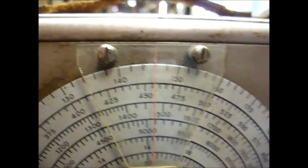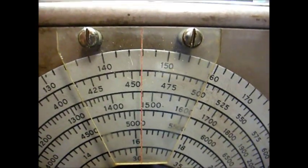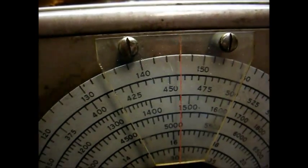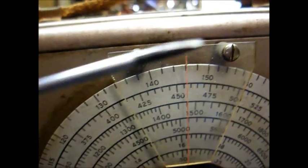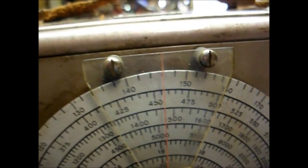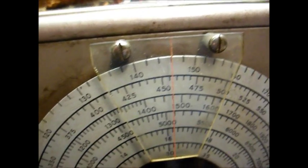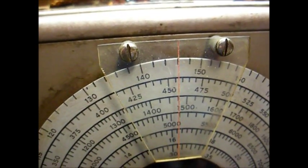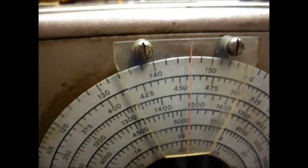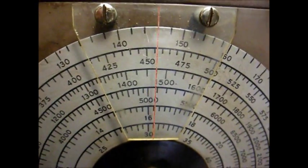Okay, we now have our IF transformers aligned to approximately 455 kilocycles. I did a no-no. I had to use this metal screwdriver to align the things, which you're really not supposed to do because the metal screwdriver can mess up the inductance while you're aligning the transformer, which makes it difficult.